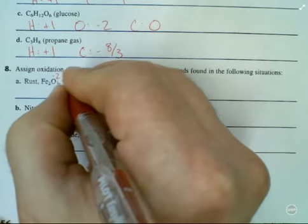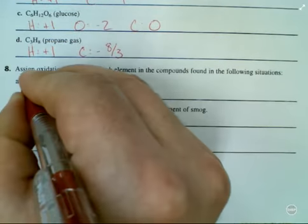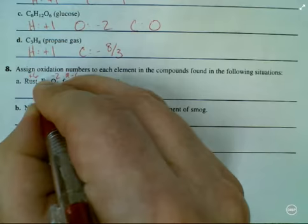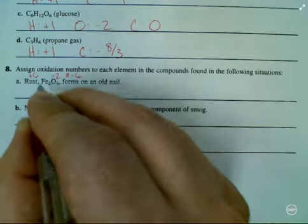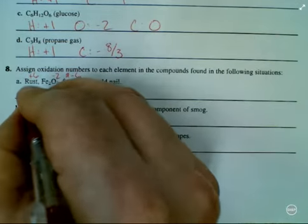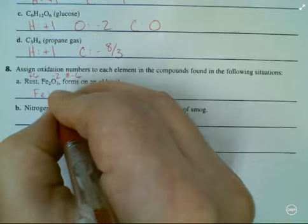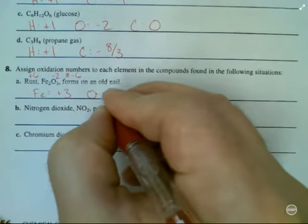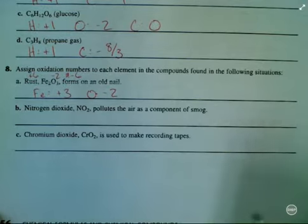That's a total of minus six over here, so I'm going to need a total of plus six over here. There are two irons to contribute that plus six, so that means that iron is going to be a plus three, oxygen minus two. Same old job.